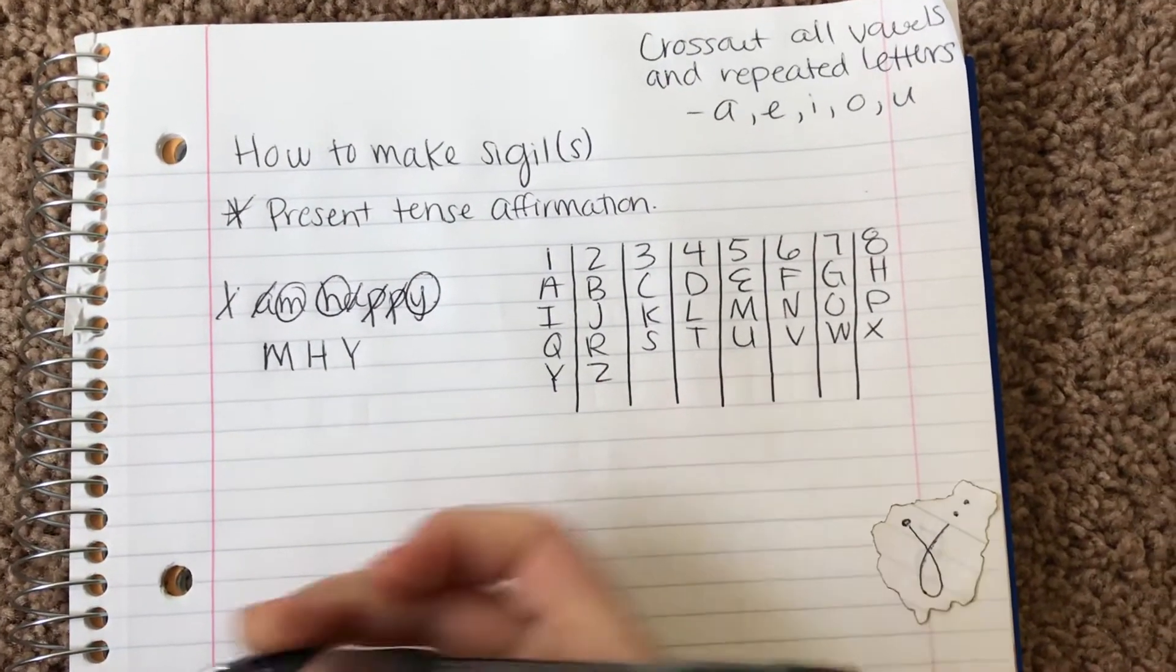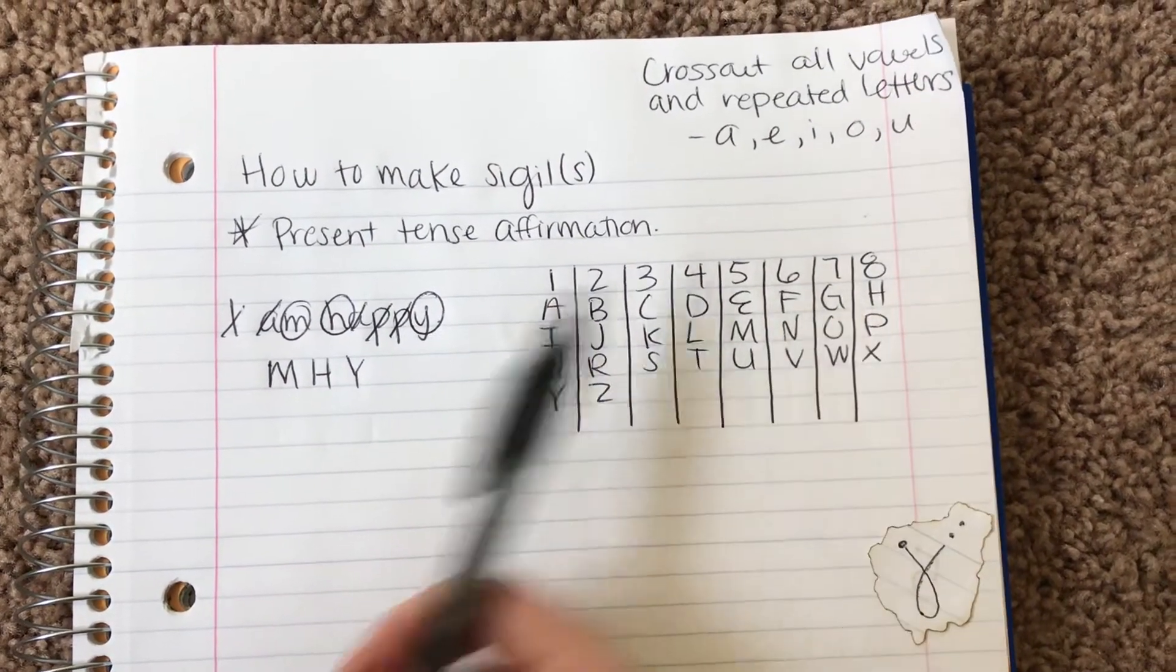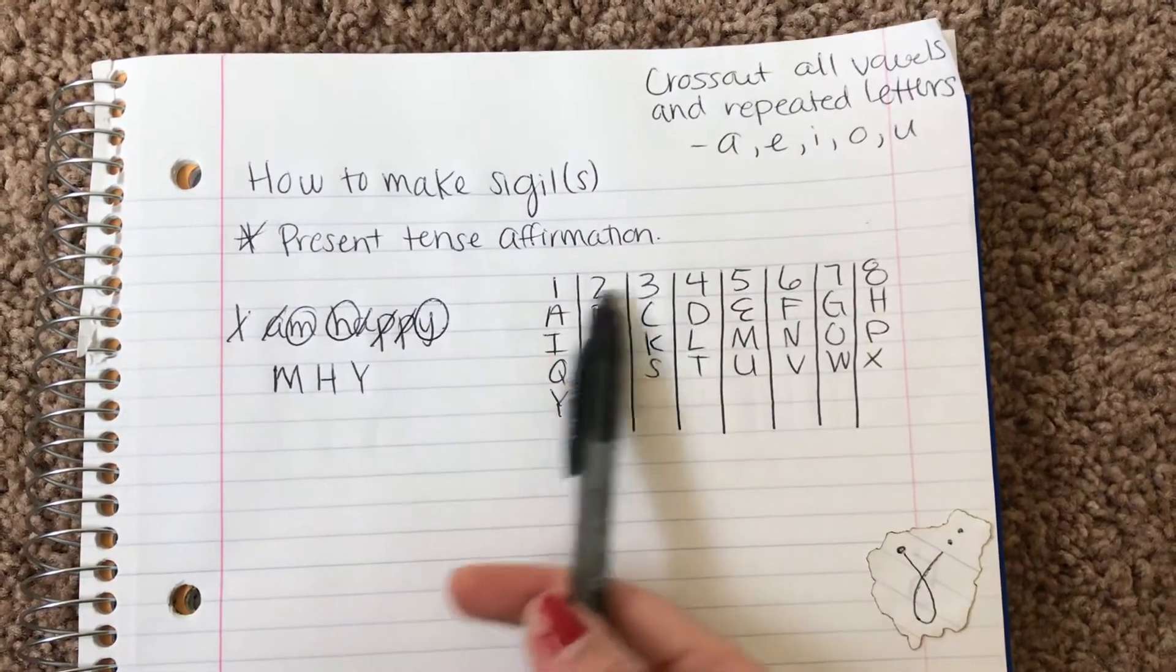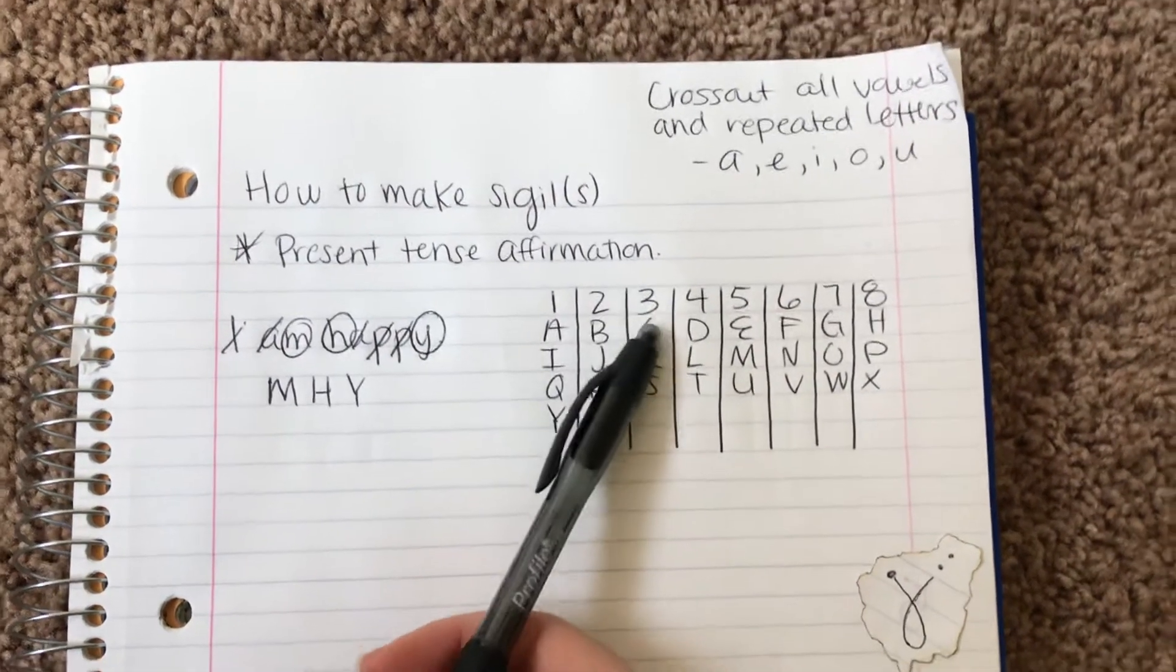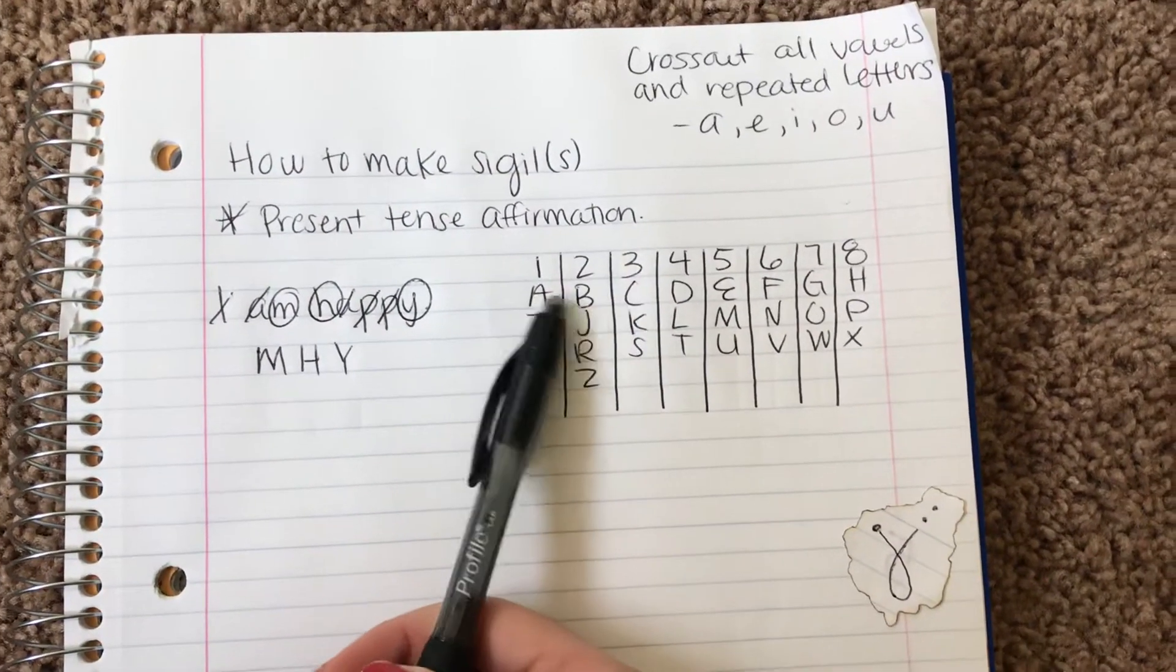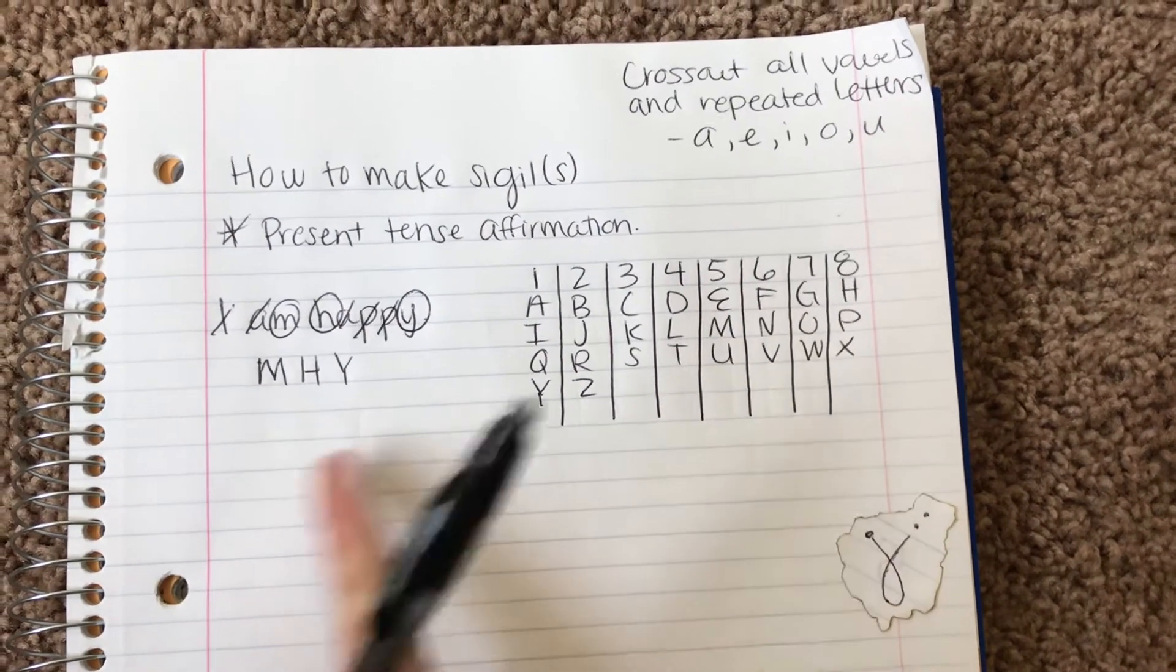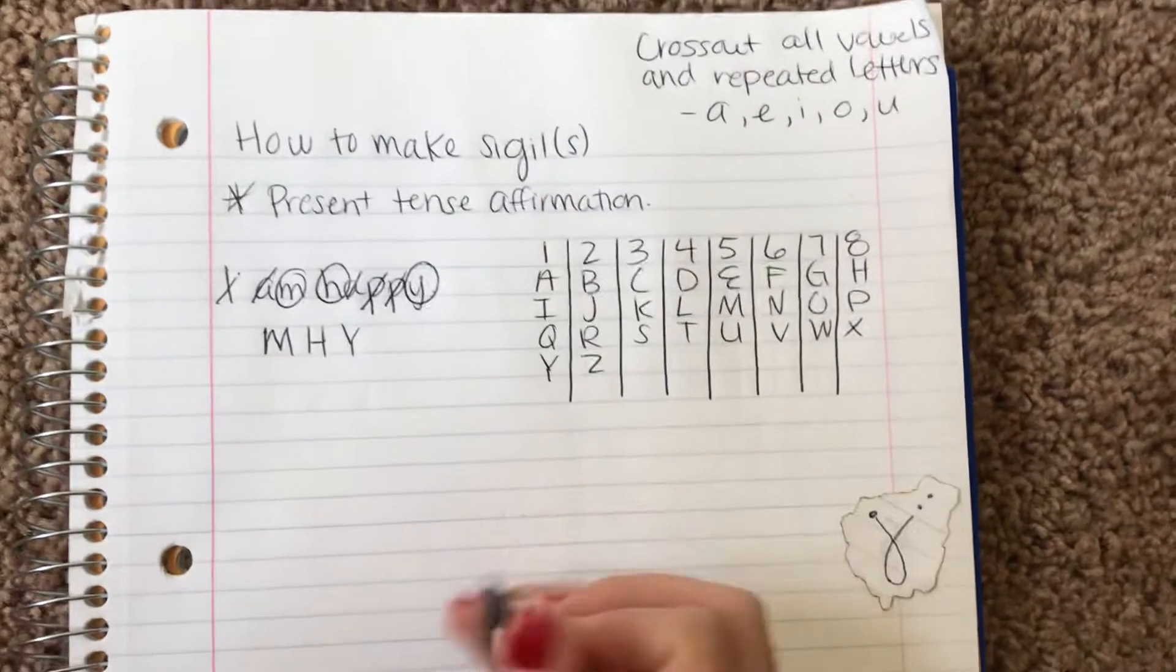Okay, so now here you want to assign a number to each letter. It doesn't really matter how many numbers you have here. I wouldn't recommend going over 10 to be honest, but it's personal preference. So here I have it till 8 and then you write down the alphabet. Okay, so now we go here to assign the numbers.